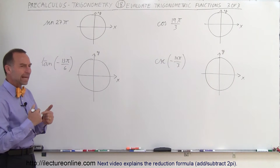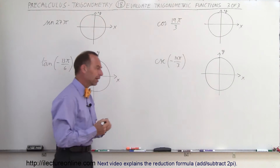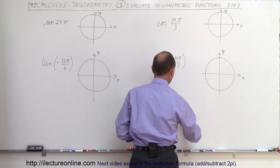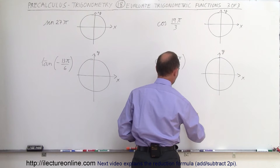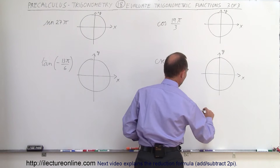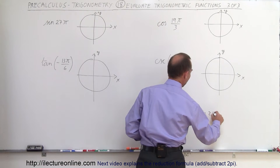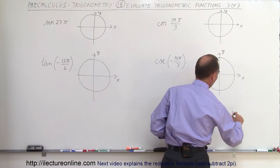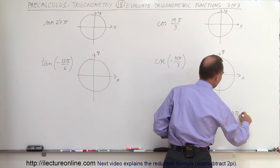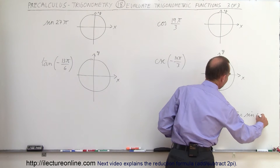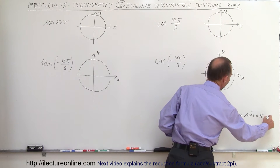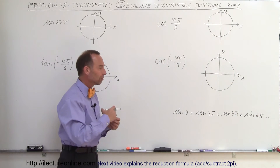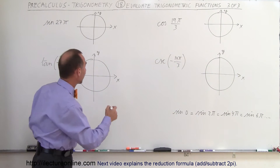What happens when the angle is greater than 2π? You have to realize that, for example, for the sine, you can say that the sine of 0 is equal to the sine of 2π, which is equal to the sine of 4π, which is equal to the sine of 6π, and so forth. So any time you cross the boundary of 2π, things start over again.